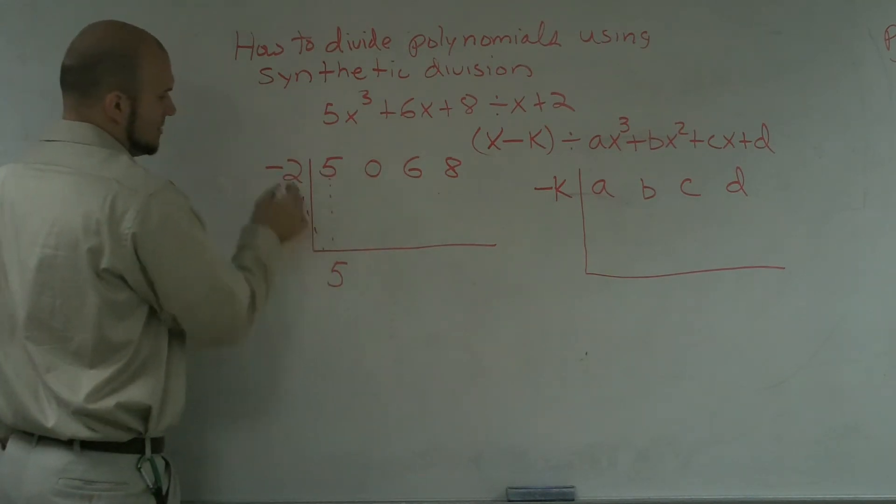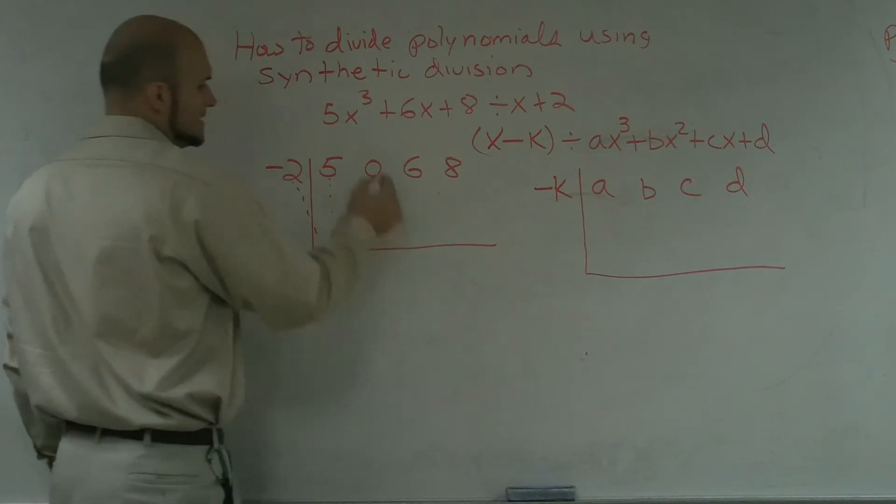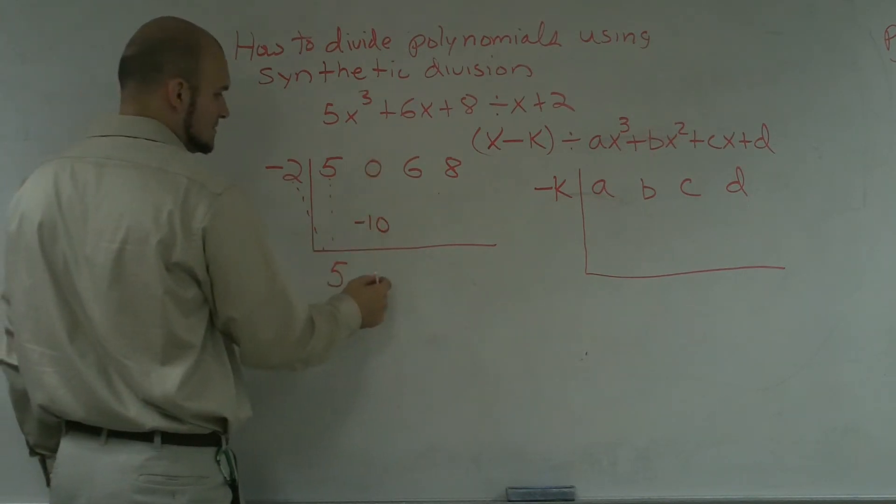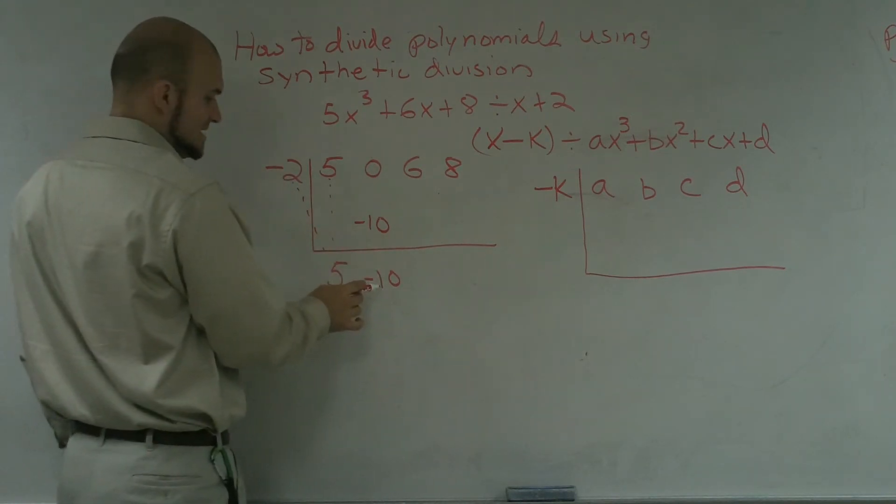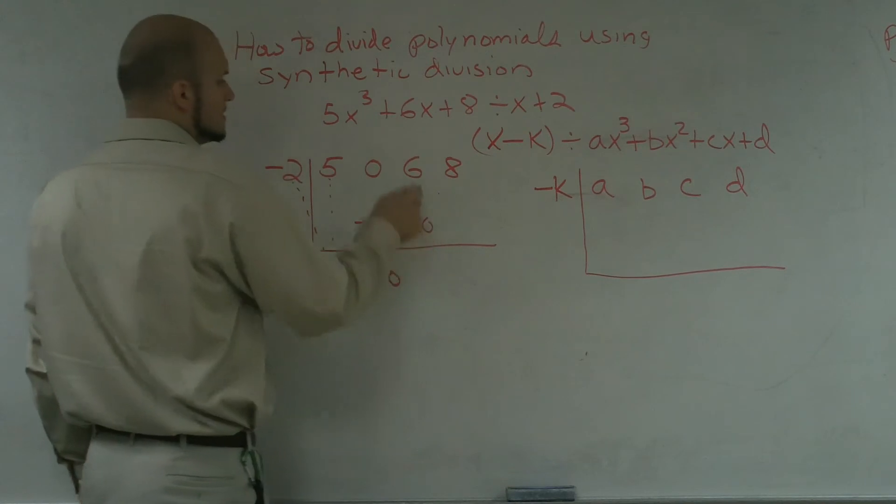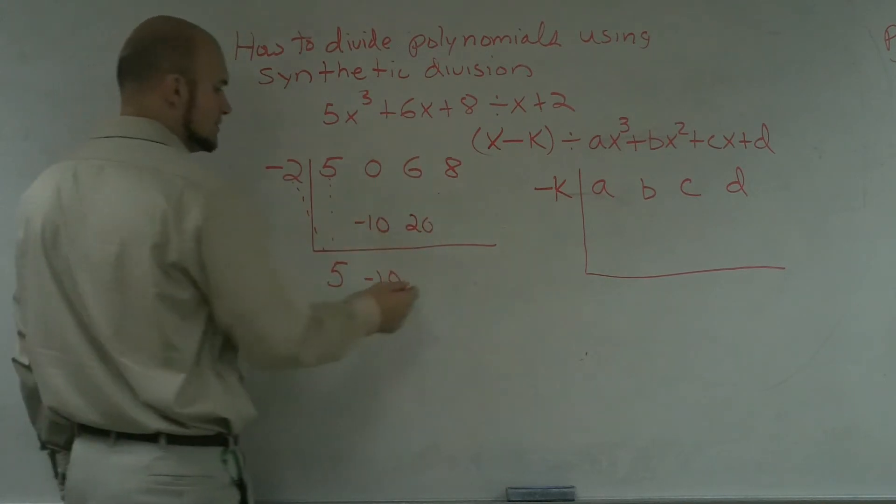So here, multiply. Negative 2 times 5 is negative 10. 0 plus negative 10 is negative 10. Negative 2 times negative 10 is positive 20. 6 plus 20 is 26.